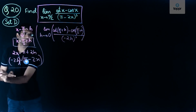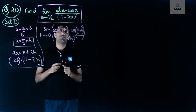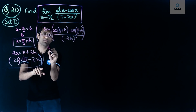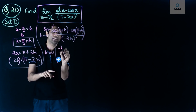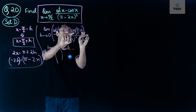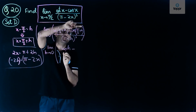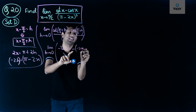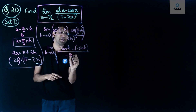Now, cot of (pi by 2 + h) equals minus tan h — this is the formula that cot of 90 plus any angle equals minus tan of that angle. And cos of (pi by 2 + h) equals minus sin h. So the numerator becomes minus tan h minus (minus sin h), giving minus tan h plus sin h, over minus 8h cubed.